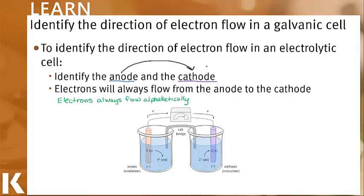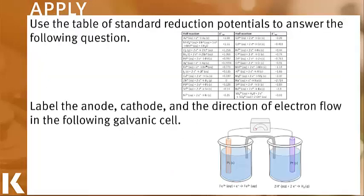Let's look at an example where we need to determine the anode and the cathode to determine the direction of electron flow. Use the table of standard reduction potentials to answer the following question: label the anode, cathode, and direction of electron flow in the following galvanic cell.